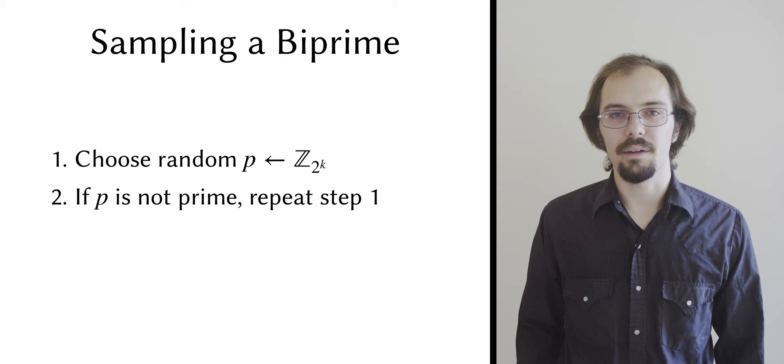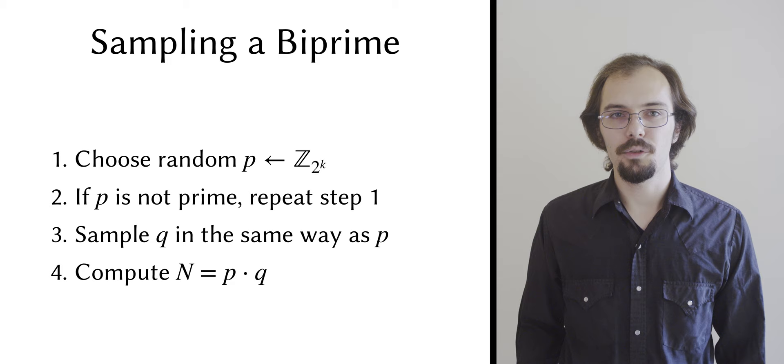When we find two primes, p and q, we multiply them together to form a 2k bit bi-prime n.